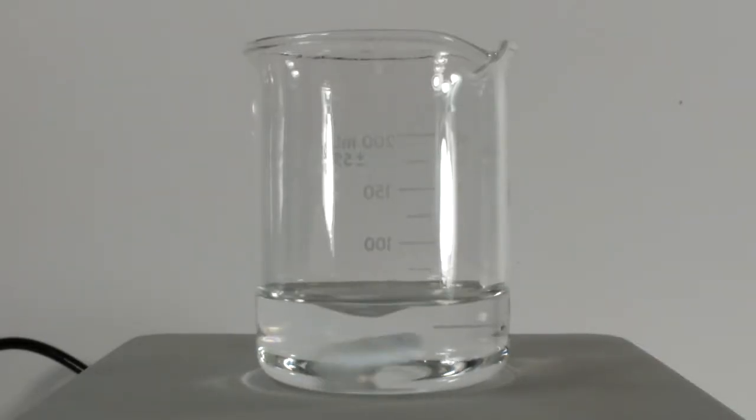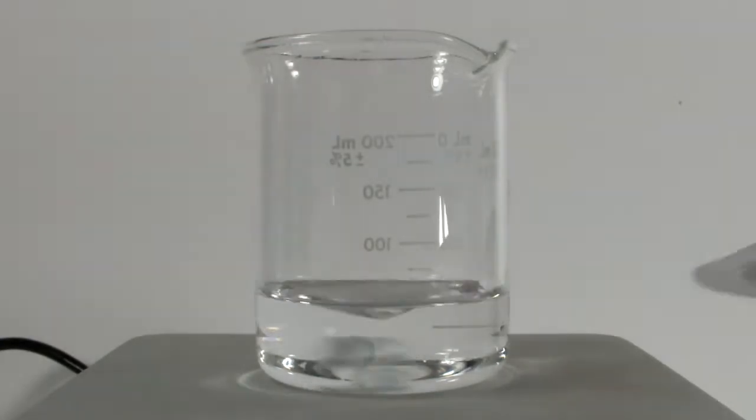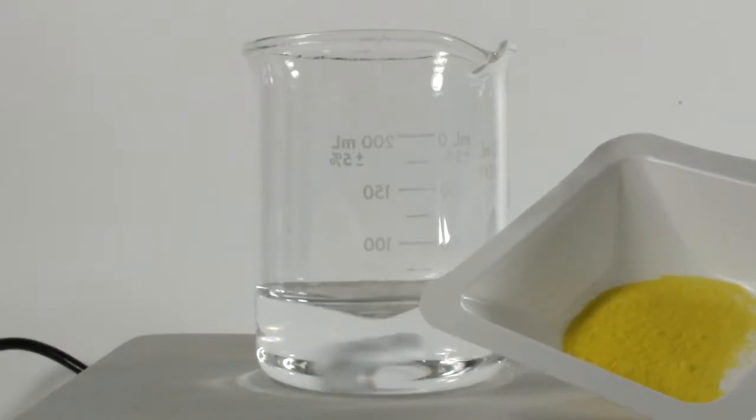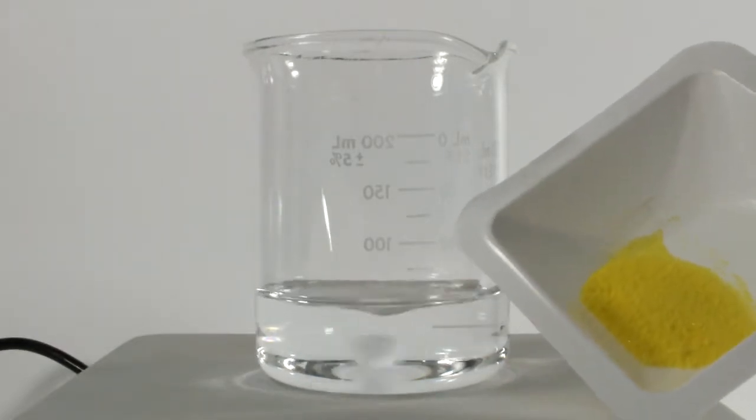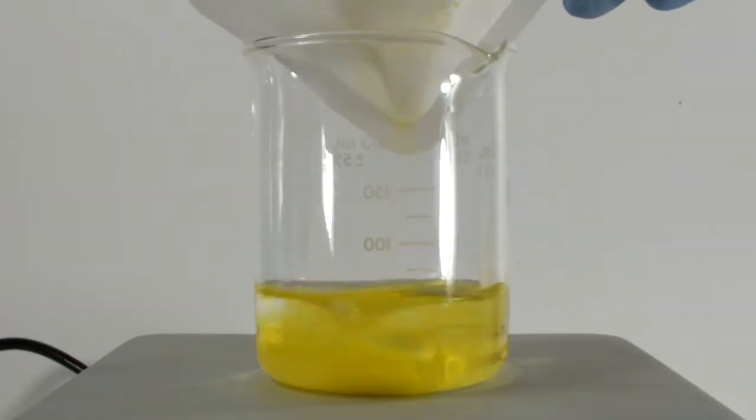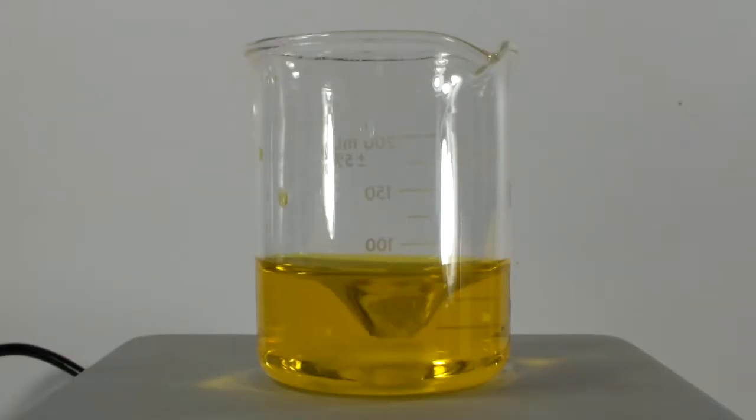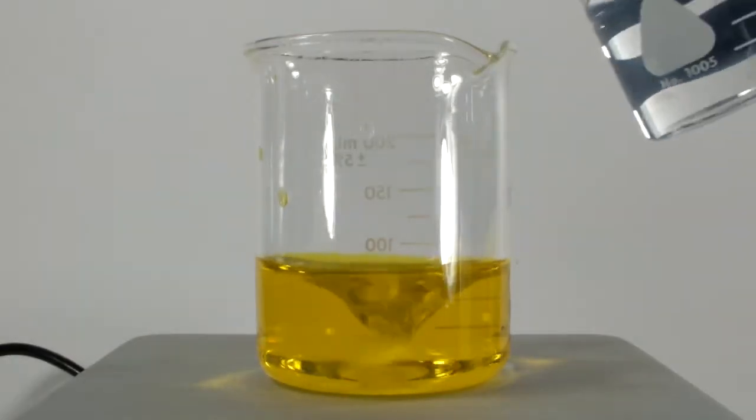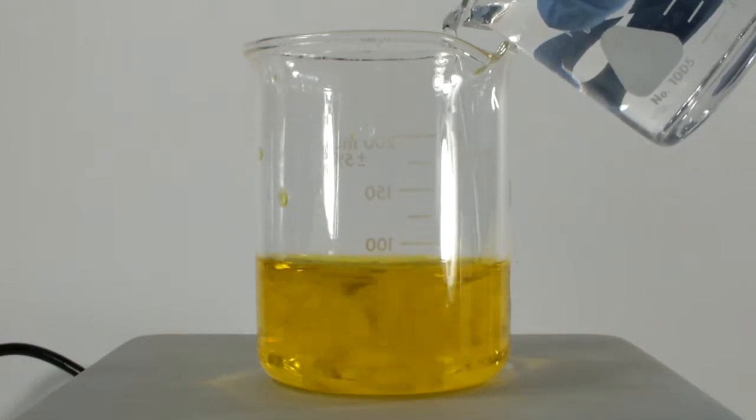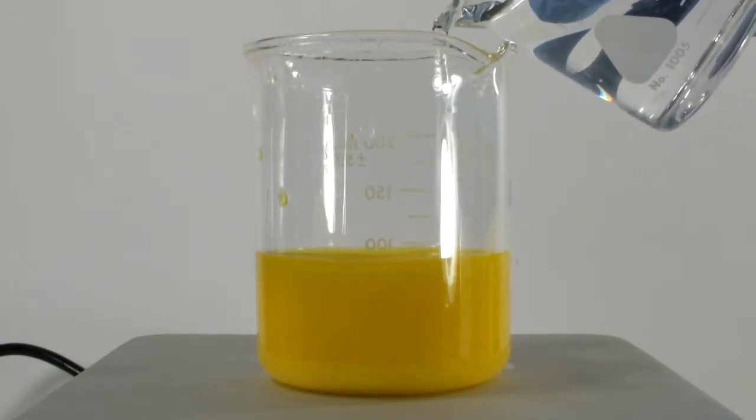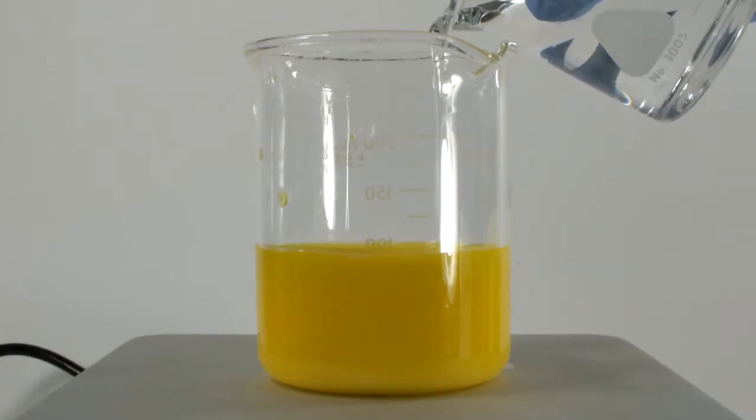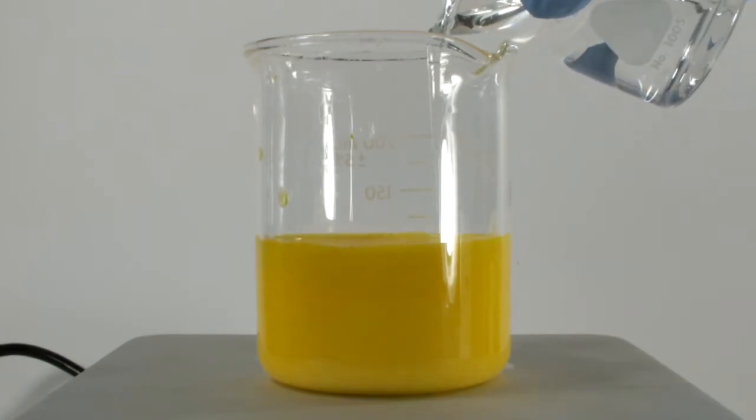As common as the lead iodide reaction is, it's certainly not the only reaction. I have here about 50 milliliters of water, and I'm going to add these 4.86 grams of potassium chromate and stir it until it all dissolves. I'm going to add 50 milliliters of a 0.5 molar solution of lead nitrate, slowly so as not to overwhelm the stirrer. I have a little excess of the lead nitrate, so all the chromium is reacted.